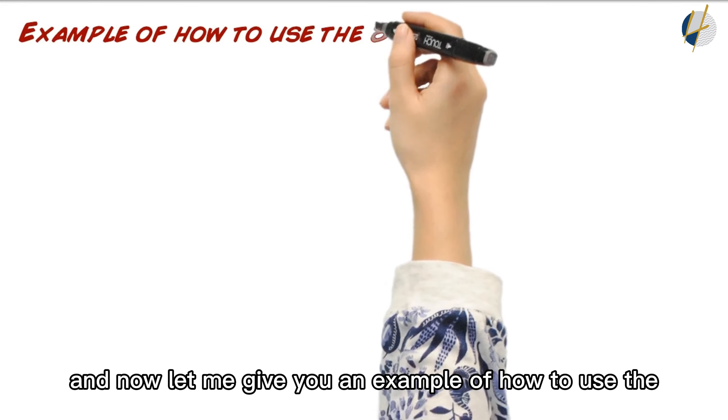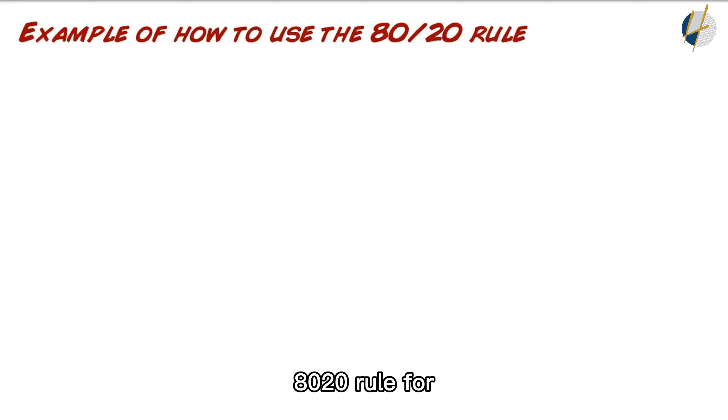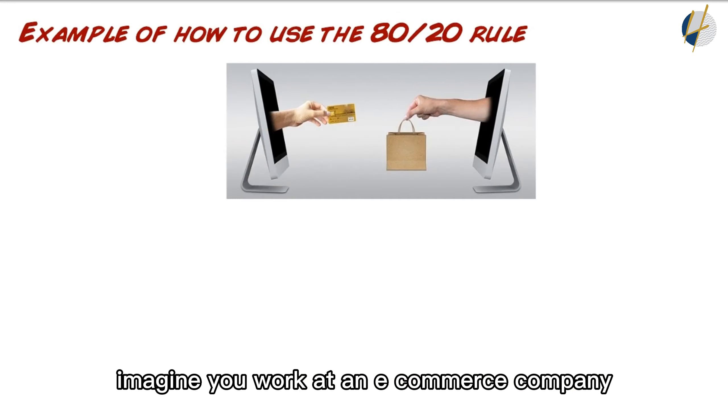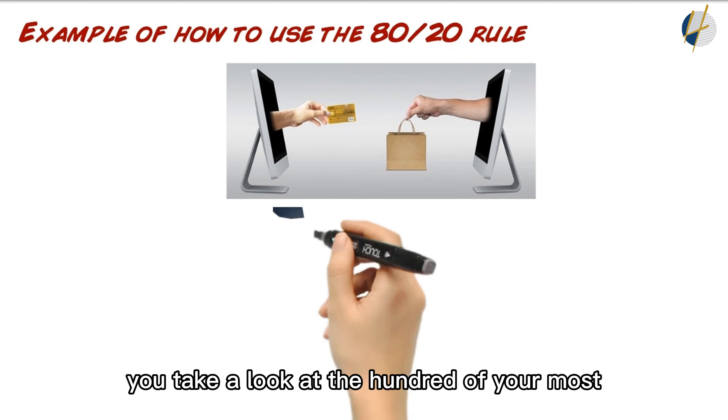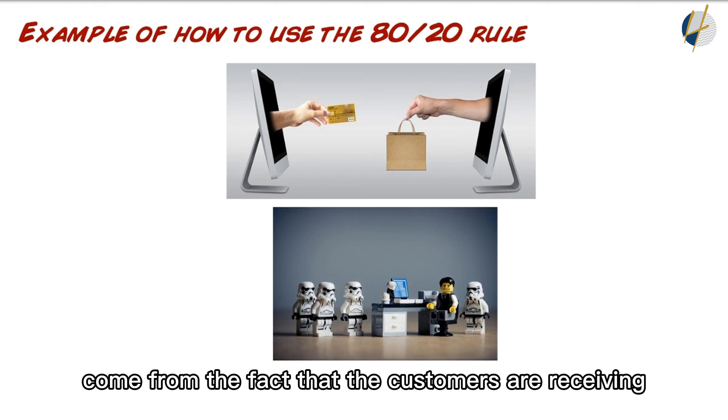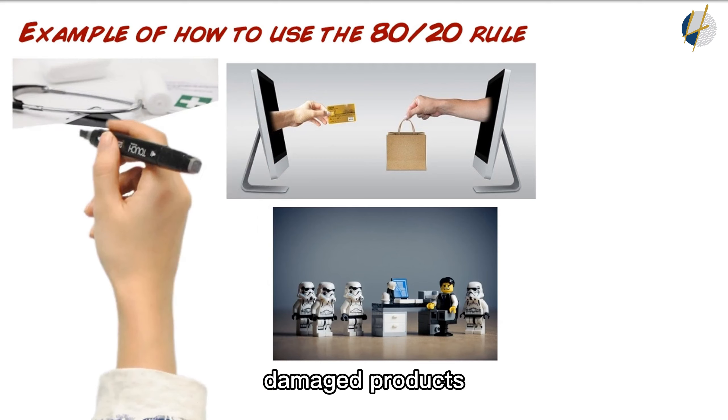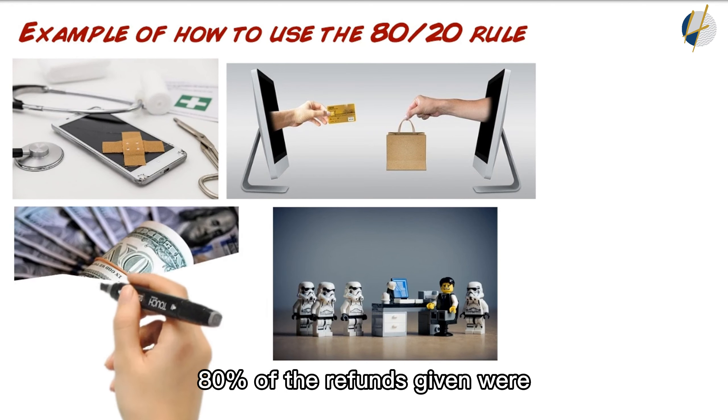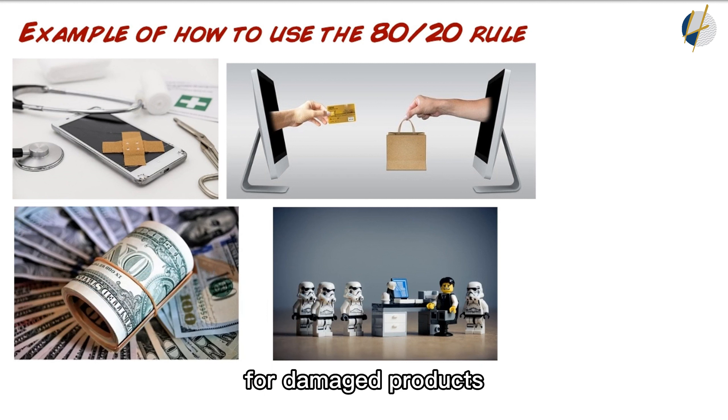Now let me give you an example of how to use the 80-20 rule for decision making. Imagine you work at an e-commerce company. You take a look at a hundred of your most recent customer service complaints and notice that the bulk of the complaints come from the fact that customers are receiving damaged products. Your team calculates the amount of refunds given for damaged products and finds that approximately 80% of the refunds given were for damaged products.